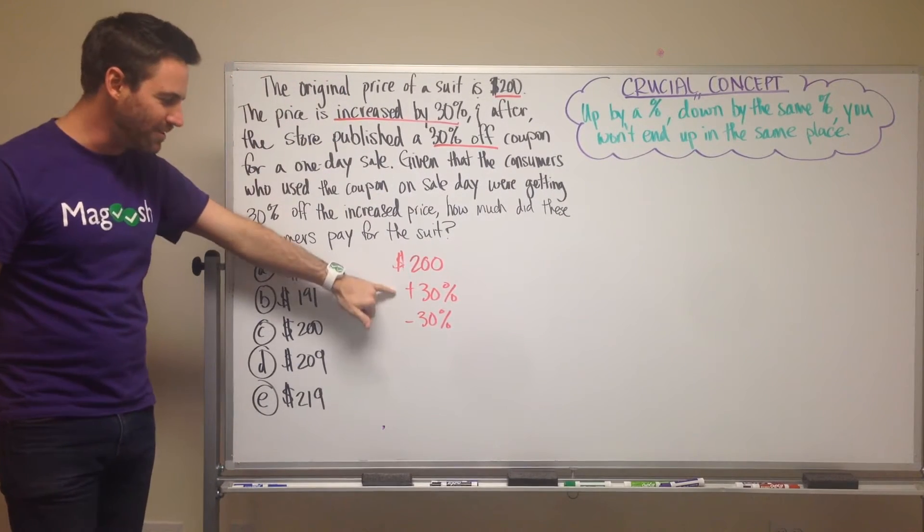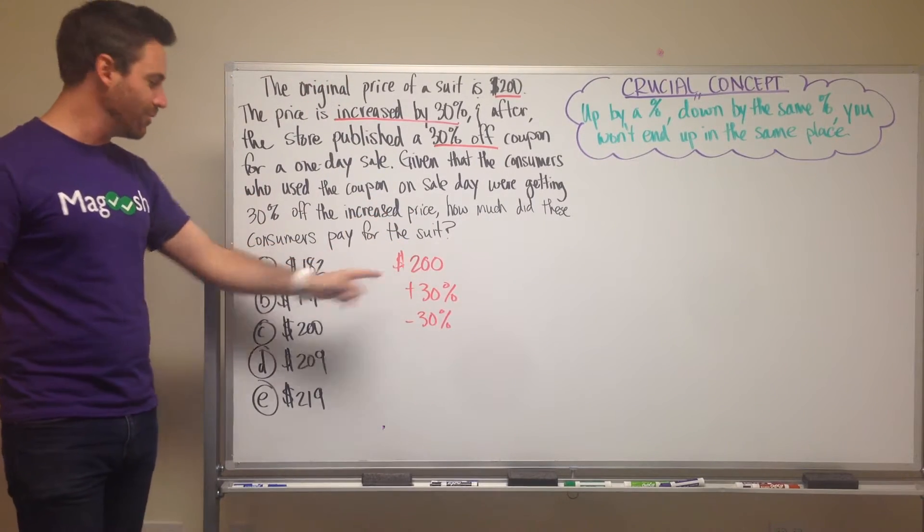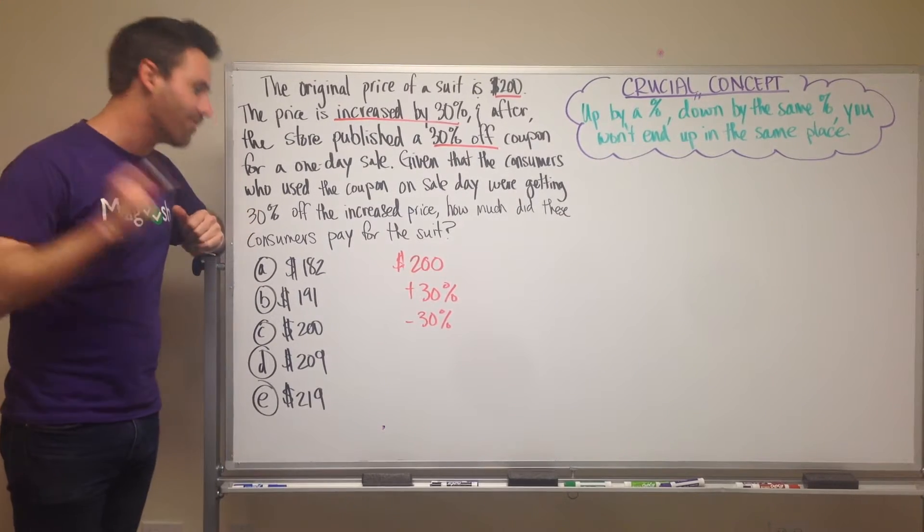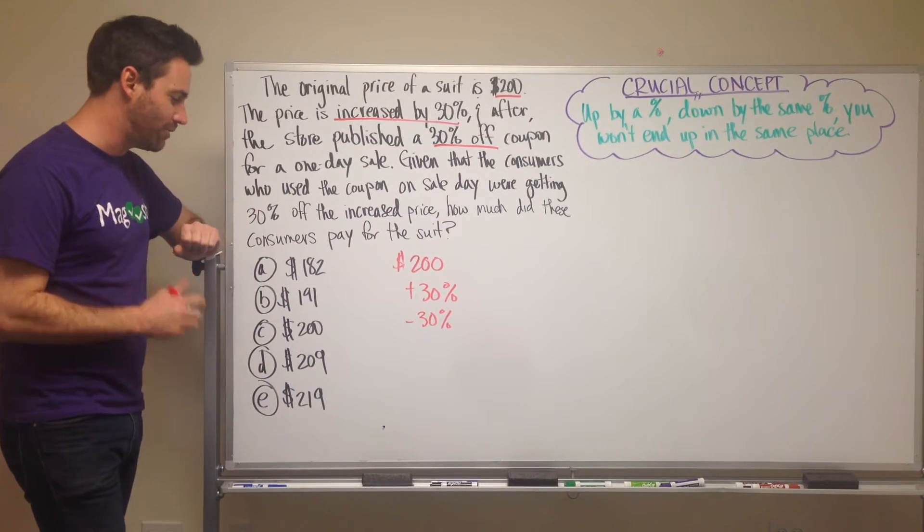And the mistake that students make is they think, oh, plus 30% minus 30%, that's like 0%, so it's going to be $200, we choose C right here. And they are wrong, they are always wrong. This is a trap that the GMAT is putting there for students to see if they fall into it.